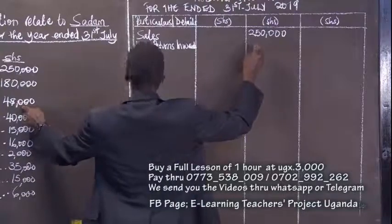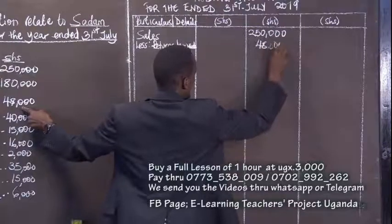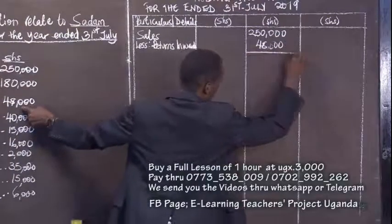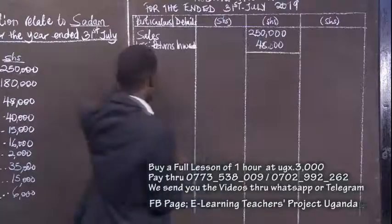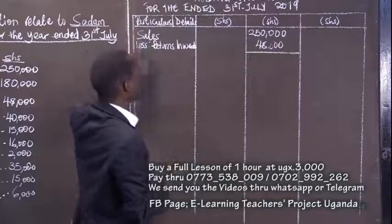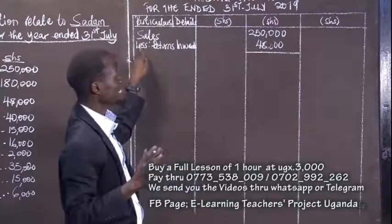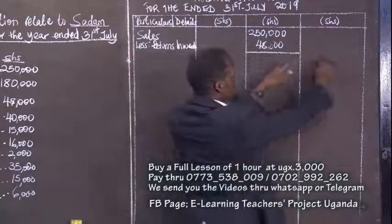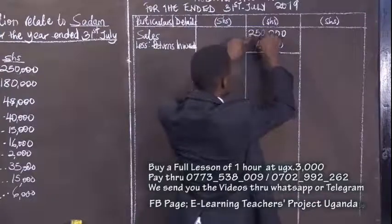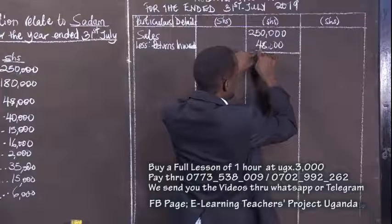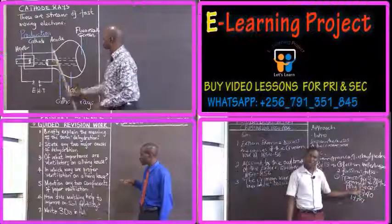We bring it here, which is 48,000. We do some ruling. Of course, if it says sales minus — because less means minus — sales minus this figure, the answer is going to be posted here: 250,000 minus 48,000, which brings the net sales figure.